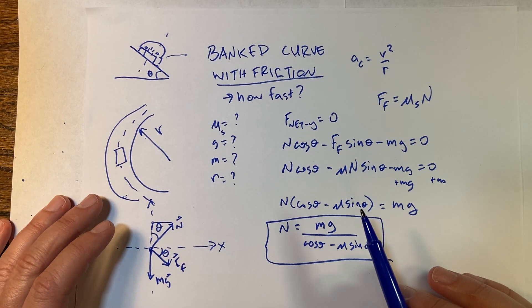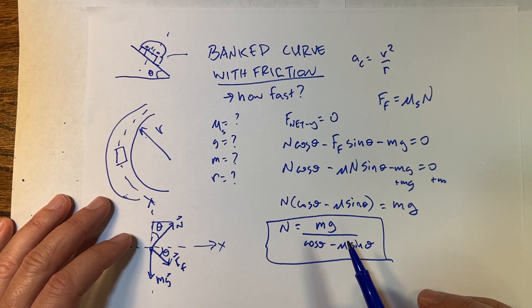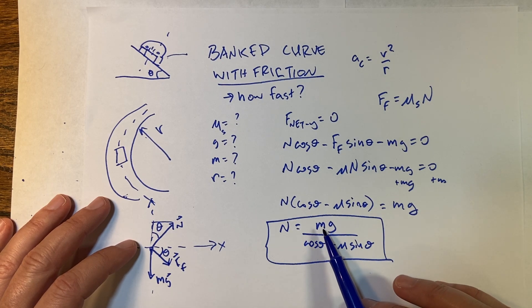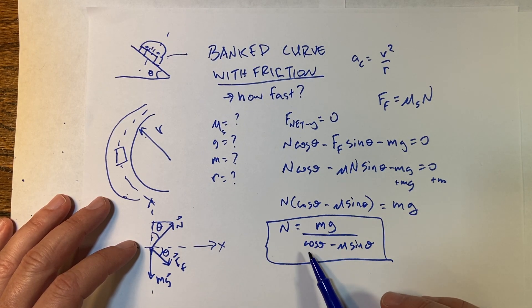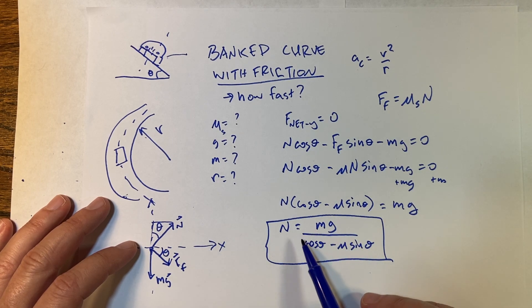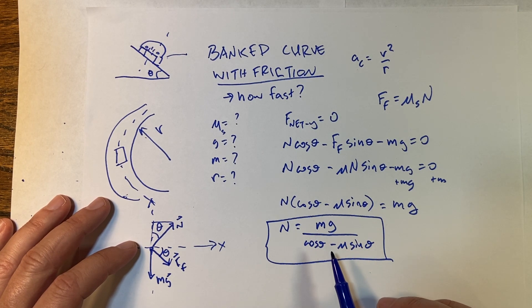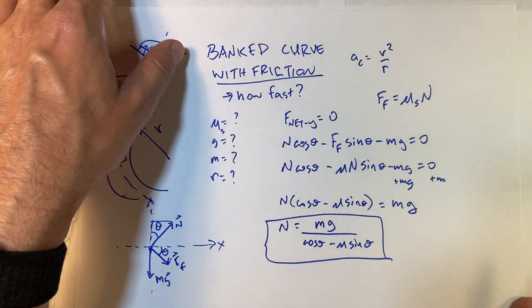Whenever you get a result like that, it's good to stop and check units. I have m times g — that's newtons — on top. On the bottom, cosine has no units, mu has no units, sine has no units. So the bottom is unitless, and this gives newtons. That's good.